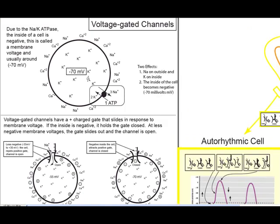The sodium-potassium ATPase is in every cell of the body. Basically what it does is it pumps three sodiums outside of each cell, two potassiums inside the cell, and it burns an ATP. There's millions of sodium-potassium ATPases in each cell, though I only have one cartoon drawn here.